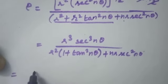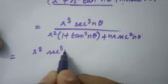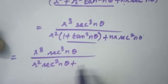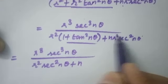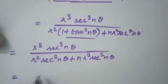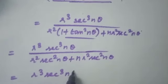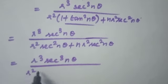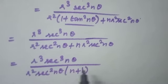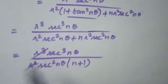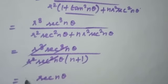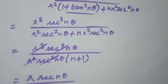The numerator becomes r²·(sec²(nθ))^(3/2) = r³·sec³(nθ). The denominator becomes r²·sec²(nθ)·(1 + n) = (n+1)·r²·sec²(nθ). So ρ = r³·sec³(nθ) / [(n+1)·r²·sec²(nθ)] = r·sec(nθ) / (n+1).